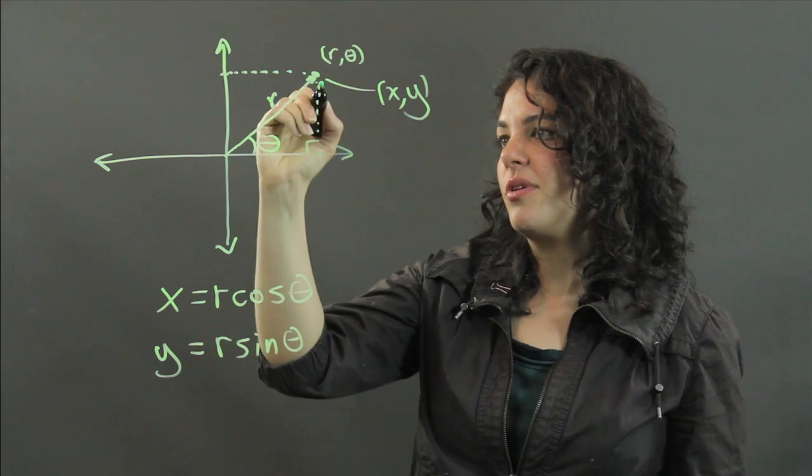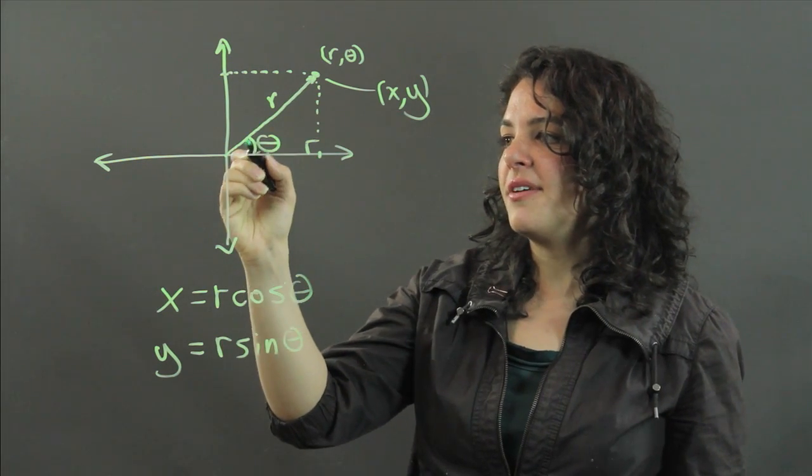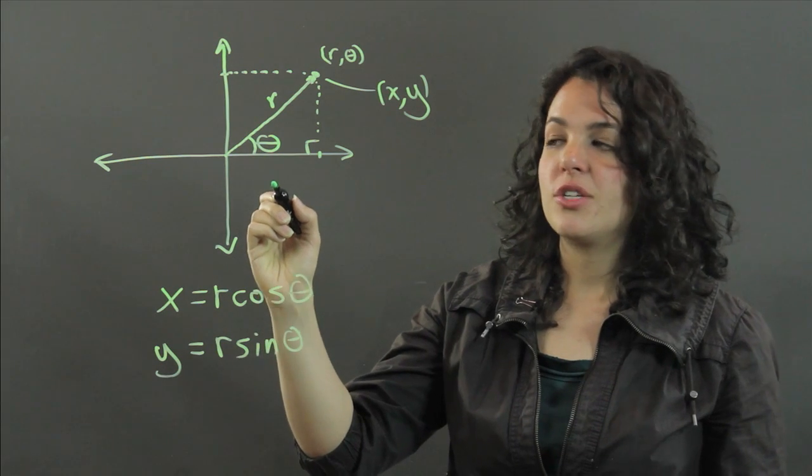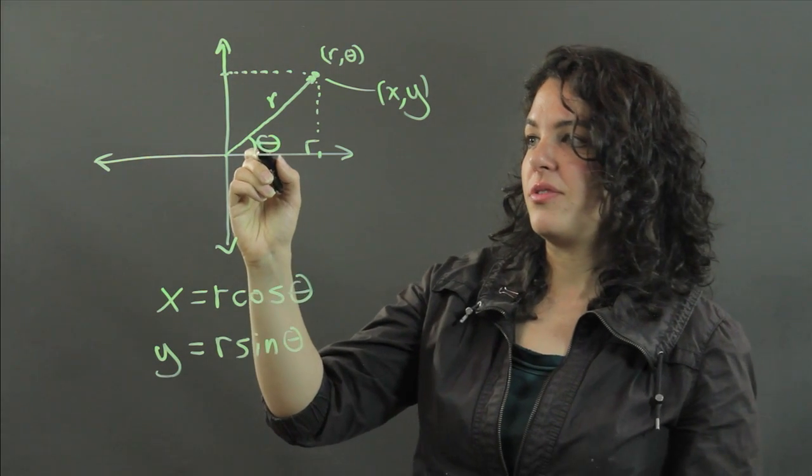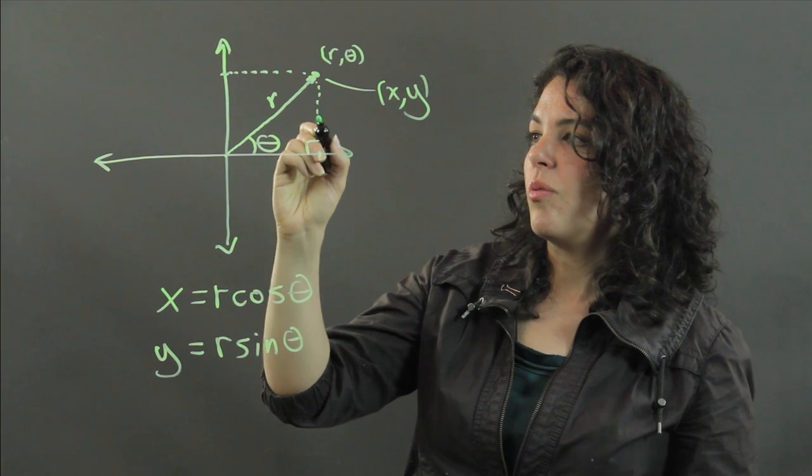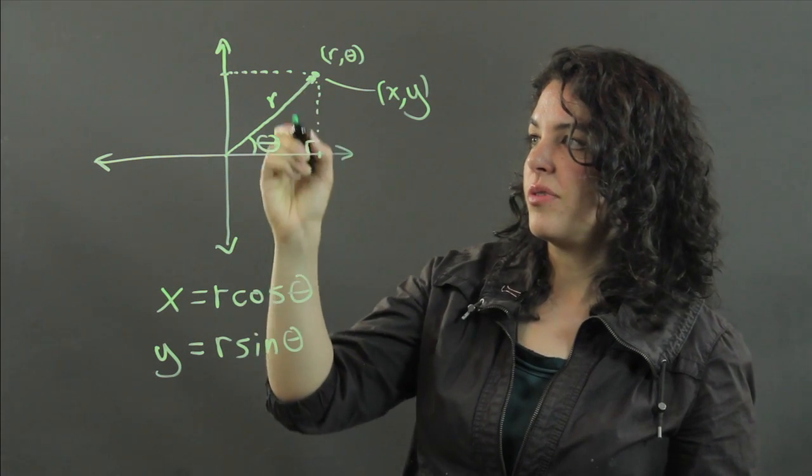Let's look at the value of y. Now, the sine of theta, sine is always opposite over hypotenuse, so that would be y over r.